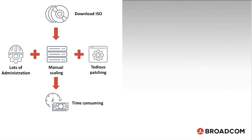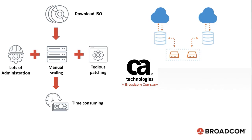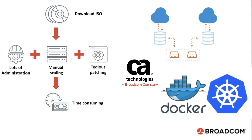Historically, any upgrade or patching has been a cumbersome and resource-intensive task, spanning from hours to days for medium to large-sized deployments. CA Service Management 17.3, via containerization, simplifies the overall install, upgrade, patching, and scaling experience. The underlying technology of Docker and Kubernetes drastically reduces the deployment time from hours or days to less than an hour for varied deployment sizes.